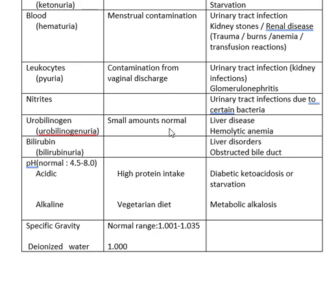If you get urobilinogen, you normally have some of it because we do recycle our blood. Your urine is usually a yellowish color, and a lot of that is the pigments from broken down blood. But if you have a little more than that, it could be because you have hemolytic anemia — one of the anemias that causes red blood cells to break open and release hemoglobin into the bloodstream. And then if you have liver disease, they're going to start doing liver tests.